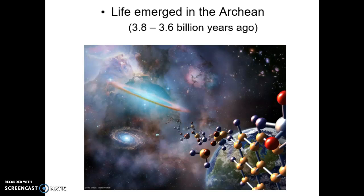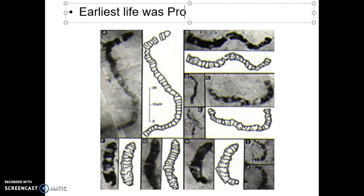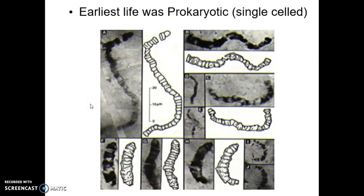The earliest life known to man, known to science, on Earth was single-celled. It was what we call prokaryotic. The fossil evidence indicates this is the oldest evidence of life on Earth. These fossils of prokaryotic organisms. So we can start with that. Now the question is, how did it get here? How did it start?